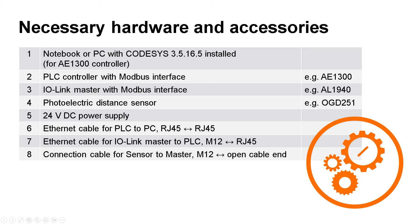Let's have a look at the necessary hardware and accessories. First, we need a notebook or PC with CodeSys 3.5 software. For the Modbus capable AE3100 controller from IFM used here, we need CodeSys 3.5.16.5 and the corresponding software package. For any other controller, the corresponding CodeSys version can be used with the respective package. We will also use an AL1940 IO-Link master, an OGD251 photoelectric distance sensor with IO-Link from IFM, a 24VDC power supply DN4012 from IFM, two Ethernet cables, and one sensor cable.